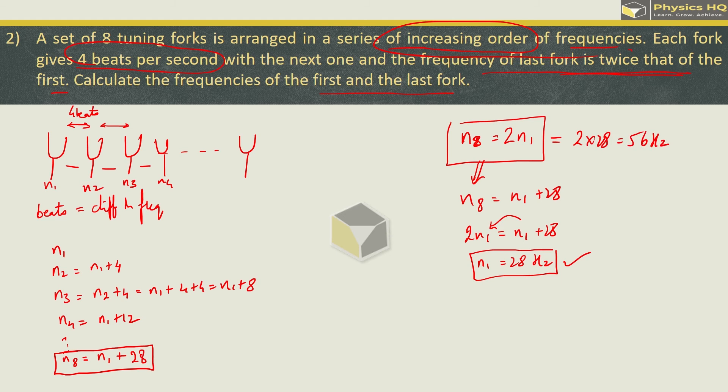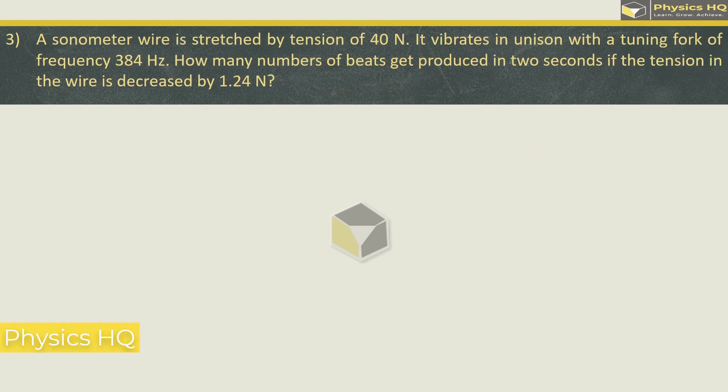A sonometer wire is stretched by a tension of 40 newton. It vibrates in unison with a tuning fork of 384 hertz. Unison means that the frequency will be the same, which is 384 hertz. Here we have a tension which is 40 newton. How many number of beats get produced in 2 seconds if the tension in the wire is decreased by 1.24 newton?